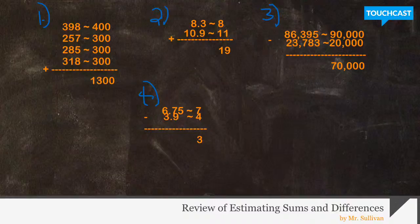398 rounds to 400, 257 rounds to 300, 285 rounds to 300, and 318 rounds to 300. Then you would add each of those up, and as you can see, the total sum then would be 1300.